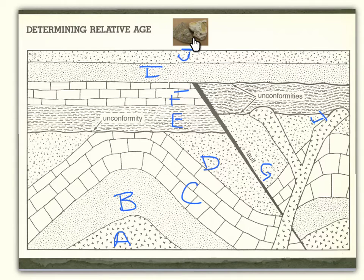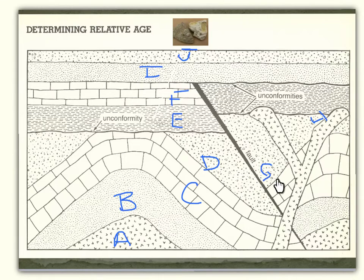Now let's look at a little more complicated things. Is the fault older or younger than letter D? Letter D is this little spotty layer right here. The fault is actually younger than letter D, because see how it sits on top of rock layer D? Remember, this is the law of cross-cutting.